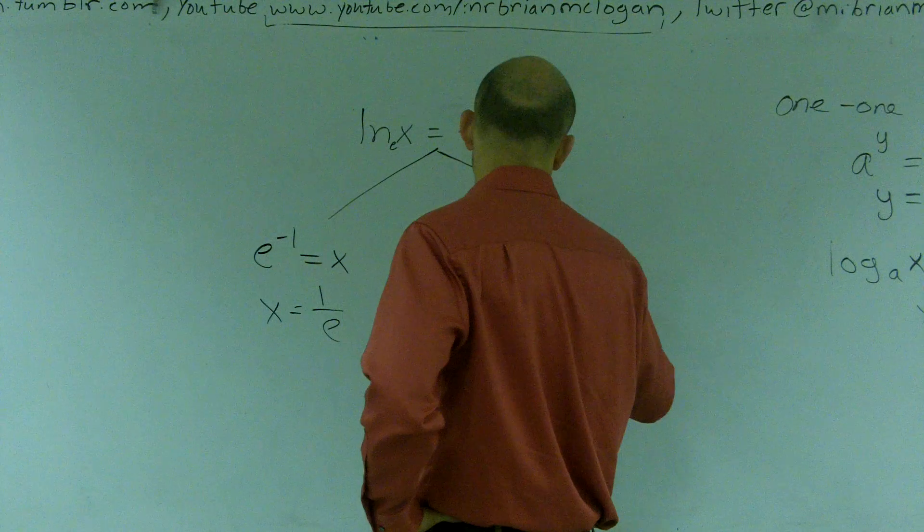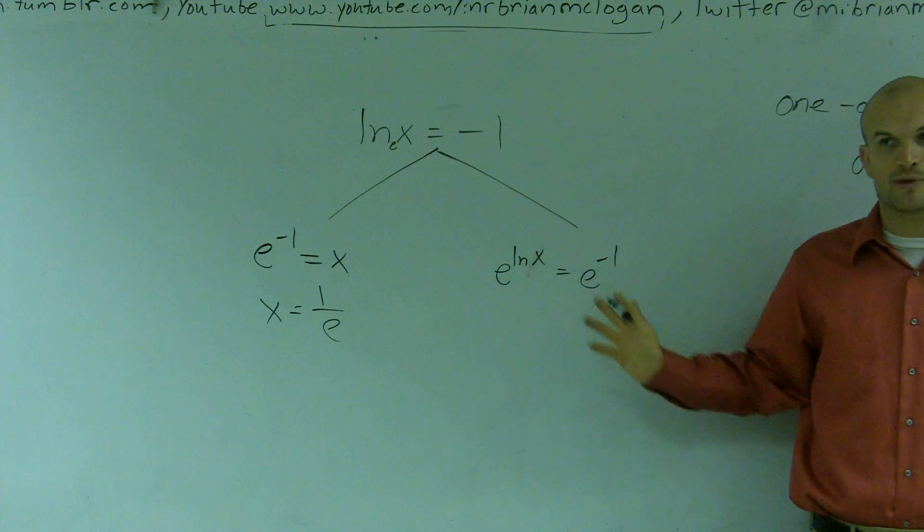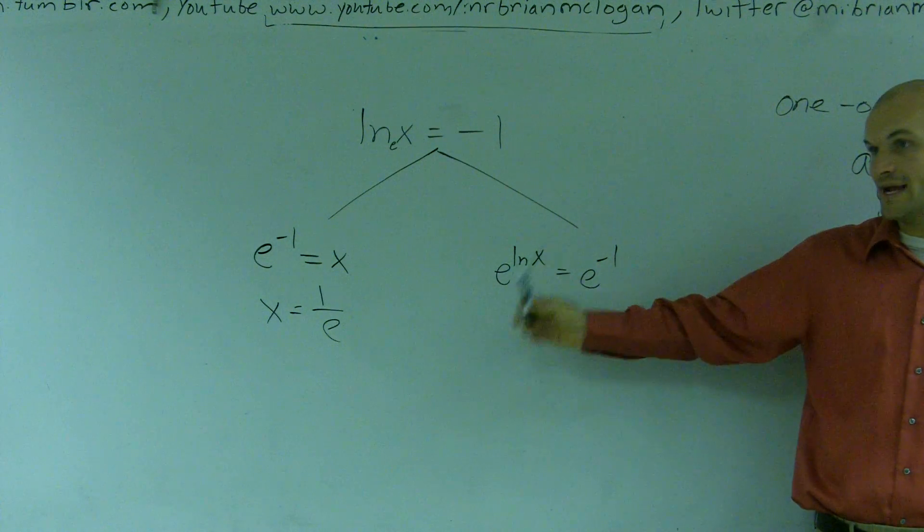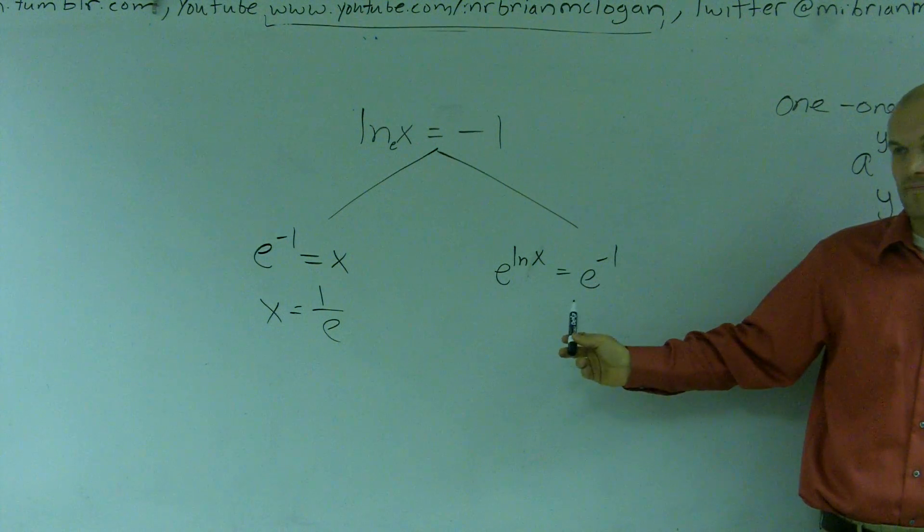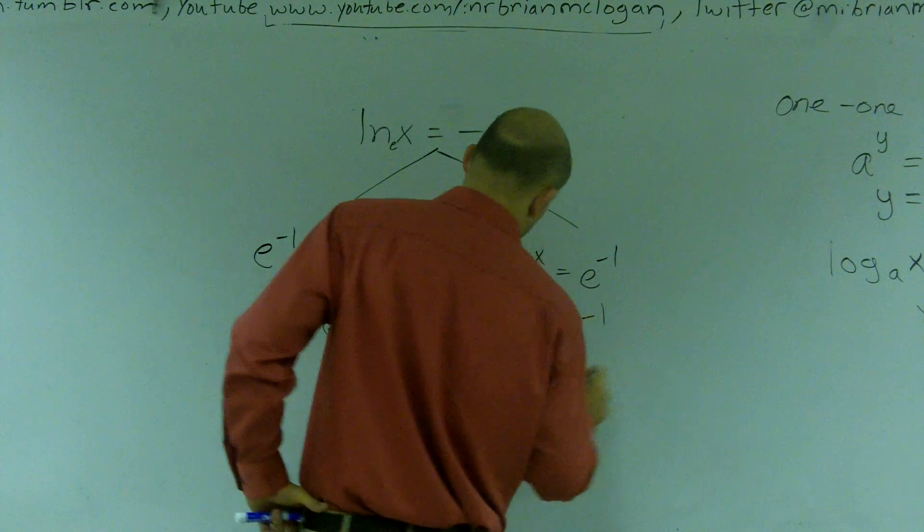And then ln of x equals e to the negative first, right? Do I need to go back over that one-on-one property again? You can raise e to both those sides. So then what happens is this now cancels out. So x equals e to the negative first.